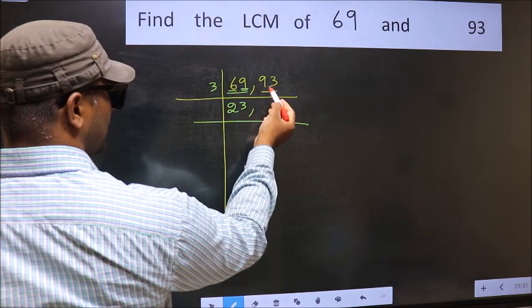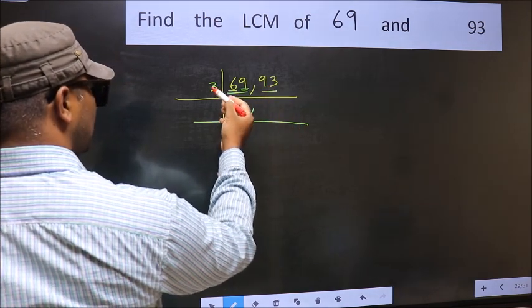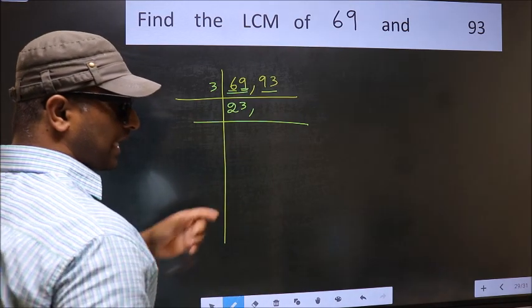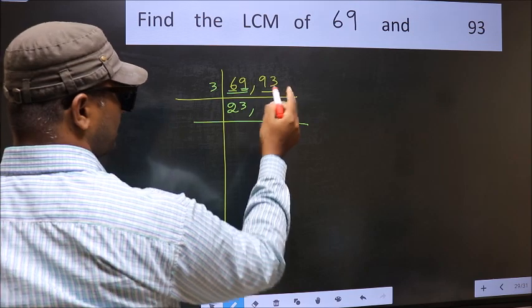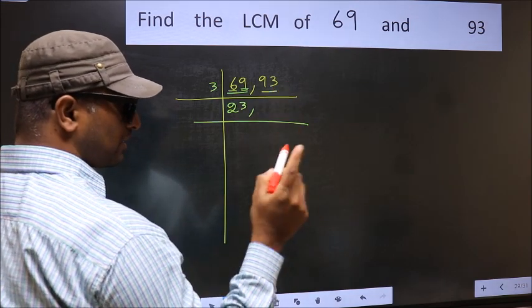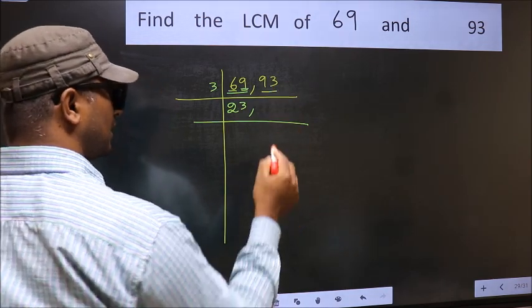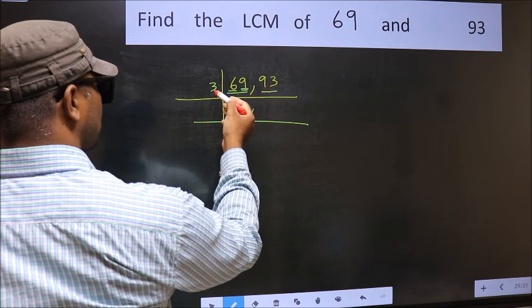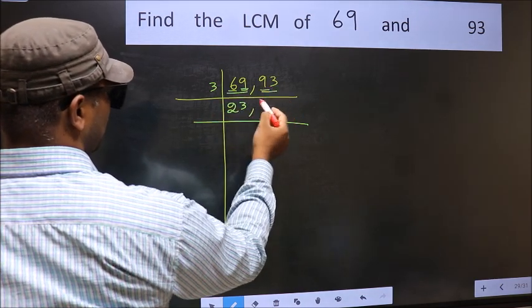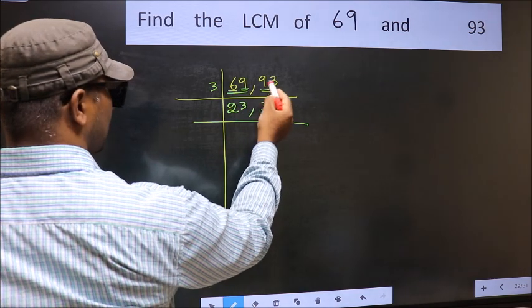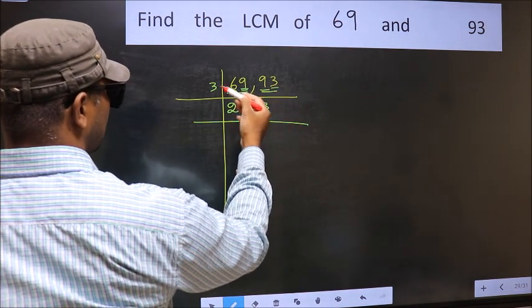The other number 93, to check whether it is divisible by 3 or not, add the digits. 9 plus 3, we get 12, and 12 is divisible by 3. So this number is also divisible by 3. First number 9, when do we get 9 in 3 table? 3, 3 is 9. The other number 3, when do we get 3 in 3 table? 3, 1 is 3.